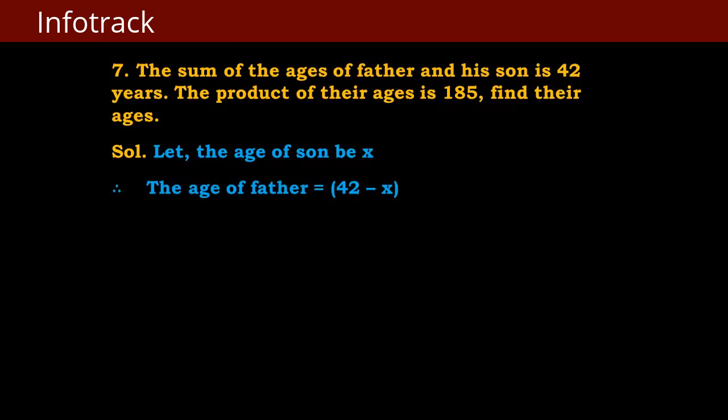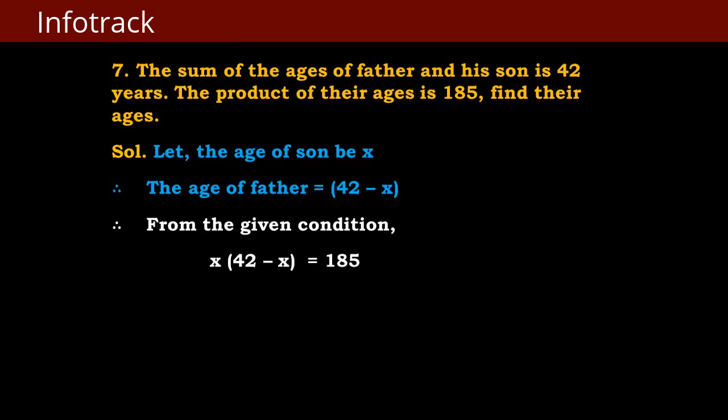As per the given condition we can form an equation: product of their ages, that is x into 42 minus x, is equals to 185. Expanding: 42x minus x square equals 185. Writing in standard form: x square minus 42x plus 185 is equals to 0.